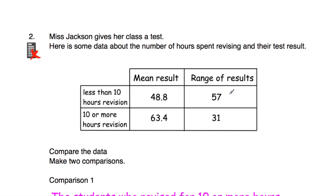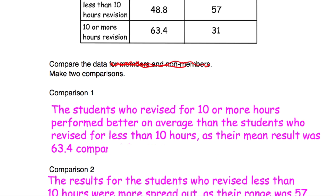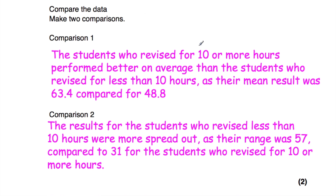The students who revised for 10 or more hours produced more consistent results — they were closer together. Our two comparisons are: first, students who revised for 10 or more hours performed better on average, as their mean result was 63.4 compared to 48.8 for those who revised less than 10 hours; second, the results for students who revised less than 10 hours were more spread out and less consistent, as their range was 57 compared to 31 for students who revised for 10 or more hours.